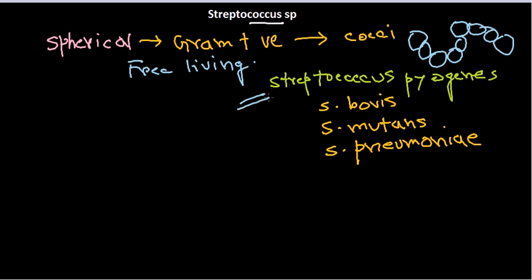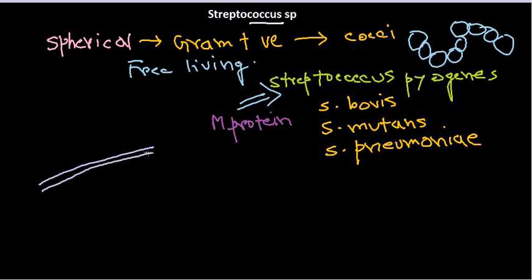Streptococcus pyogenes is particularly dangerous because it can cause severe diseases. It causes infections with the help of a protein called M protein. Looking at the structure of S. pyogenes, it has a cell membrane, and outside that is a cell wall.